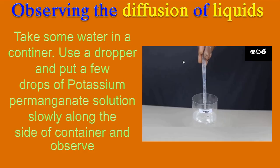Now let us observe the diffusion of liquids. Take some water in a container, use a dropper, and put a few drops of potassium permanganate solution slowly along the side of the container and observe.